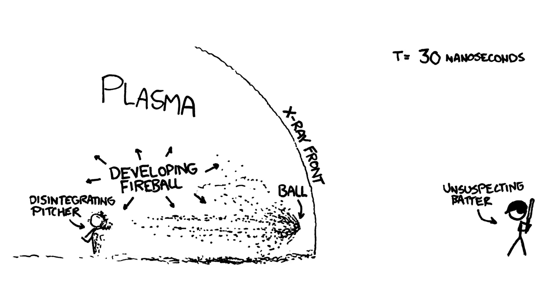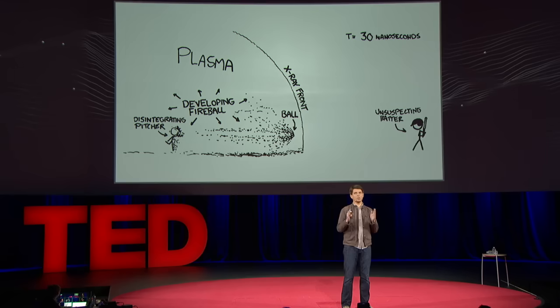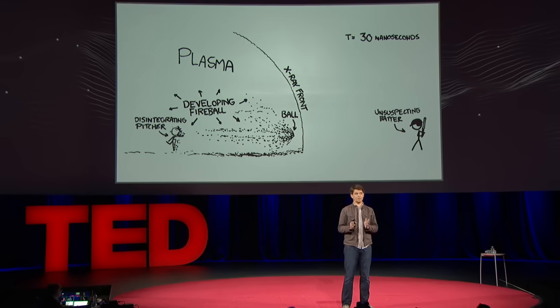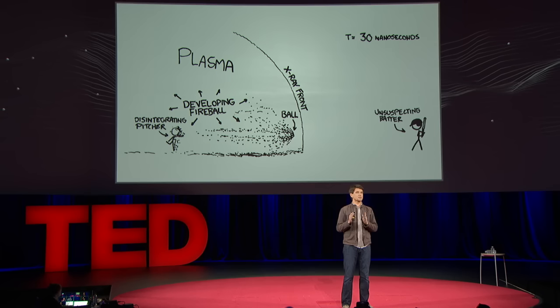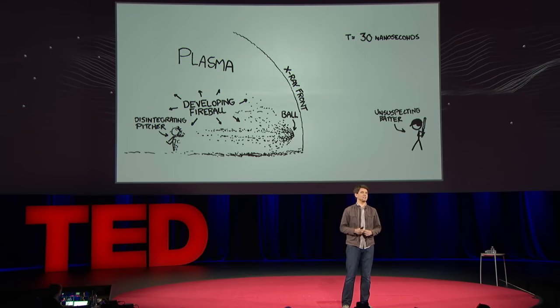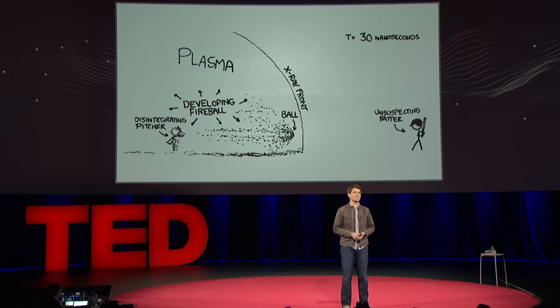At about 30 nanoseconds in, the home plate is far enough away that light hasn't had time to reach it, which means the batter still sees the pitcher about to throw and has no idea that anything is wrong.